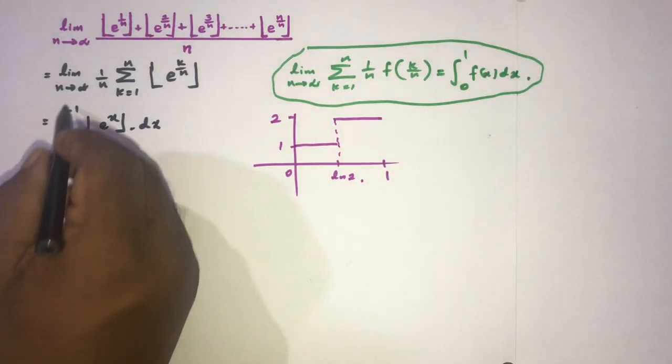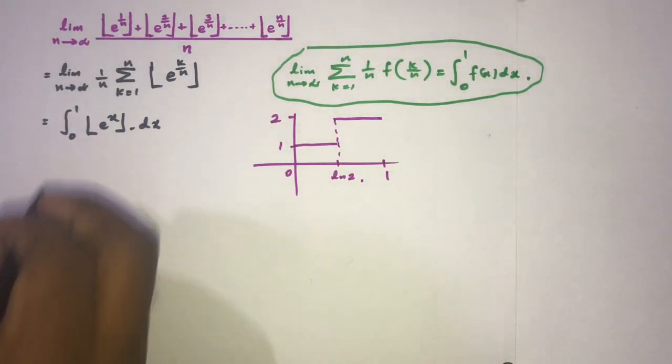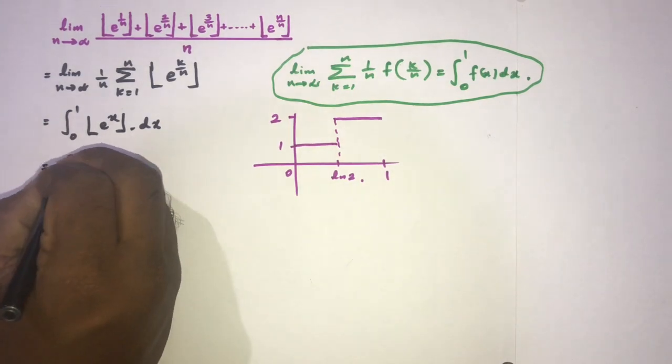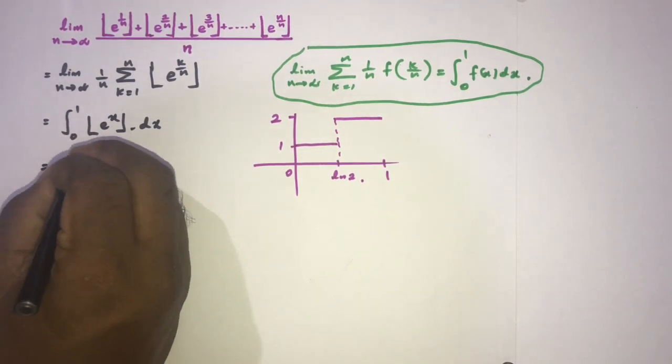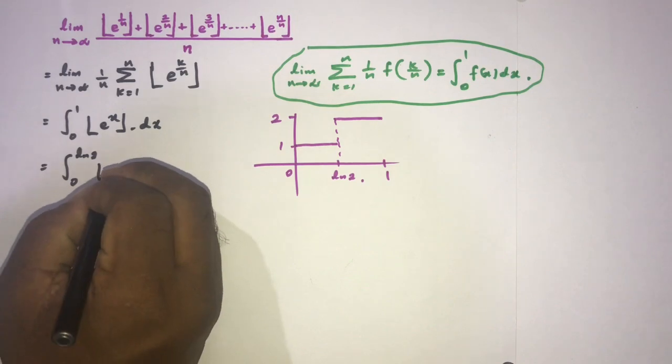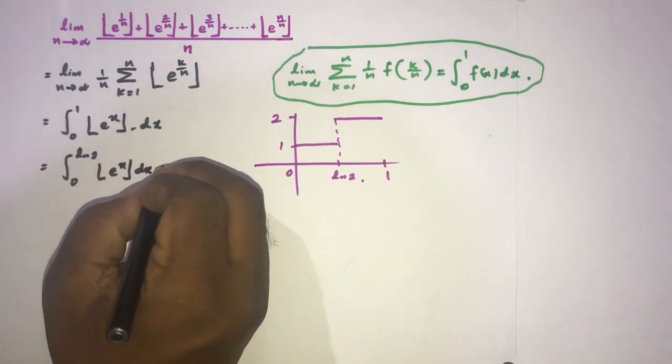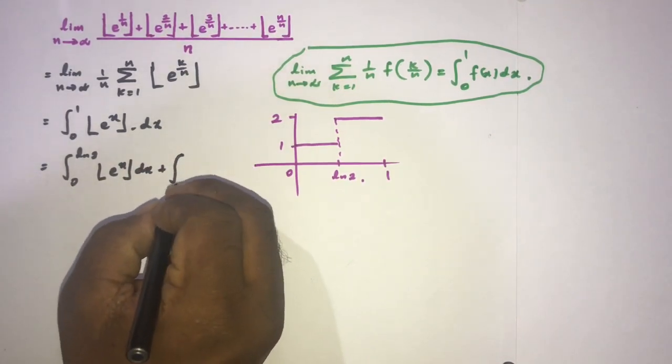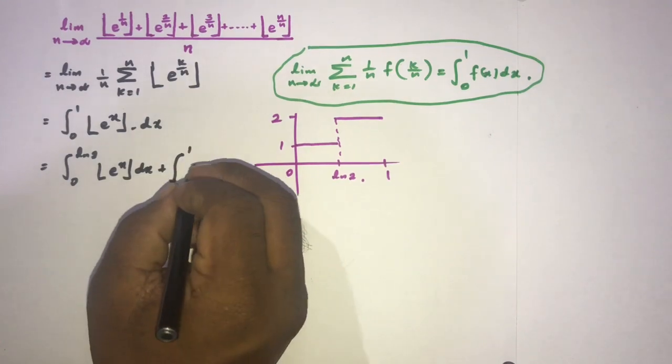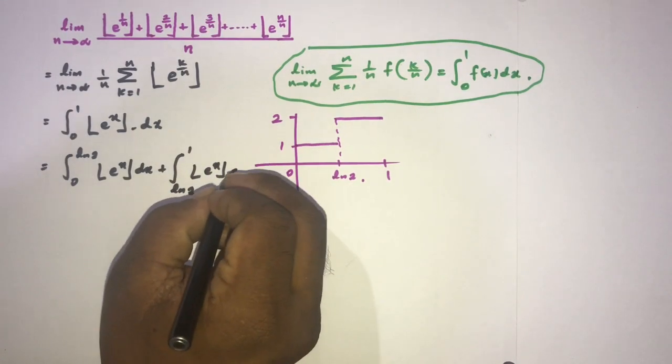So we can break this limit, this boundary like integral from 0 to natural log of 2 floor of e to the x dx plus natural log of 2 to 1 floor of e to the x dx.